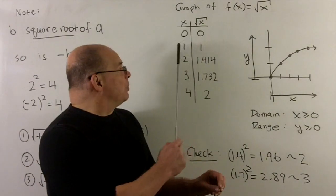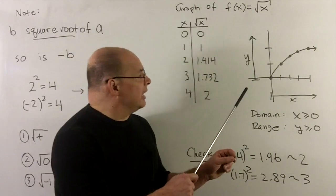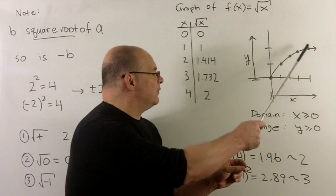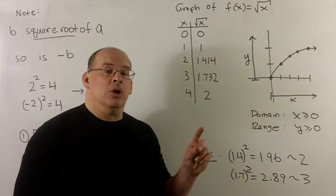Now, if we take these points, plot them in the xy plane, we'll get this curve here if we just fill in the spaces. So that's our graph of square root of x.